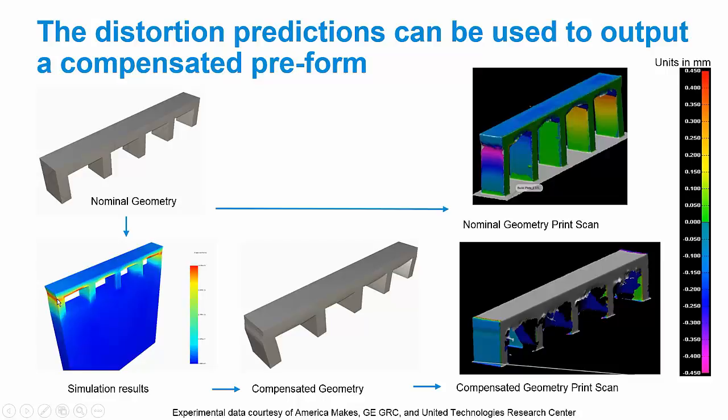We've actually built these parts. This is an example of the part built using just the nominal geometry. And you see you get some distortion in this region. But then when the part is built using the compensated preform, you can see that you get much less distortion along this interface. So distortion compensation is a very useful tool to combat this problem.